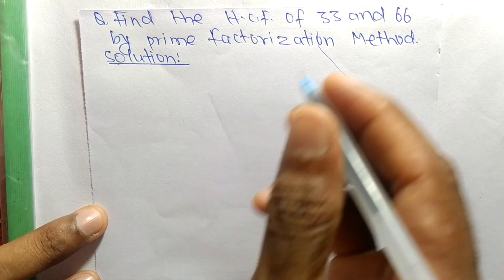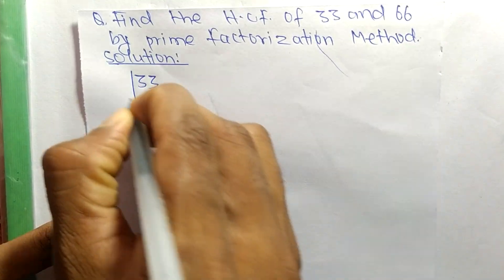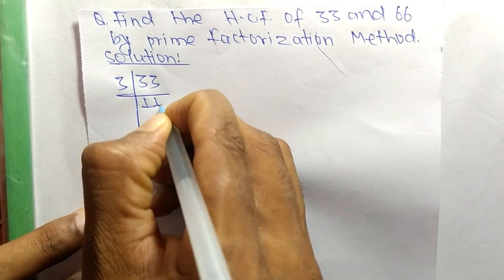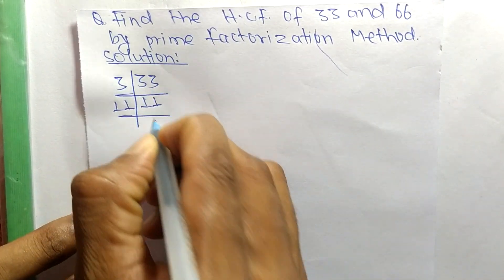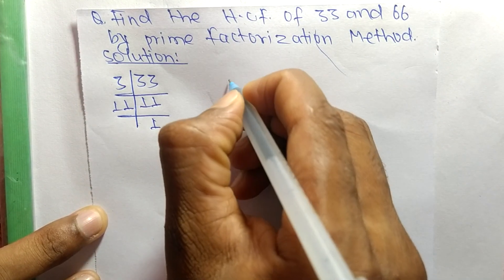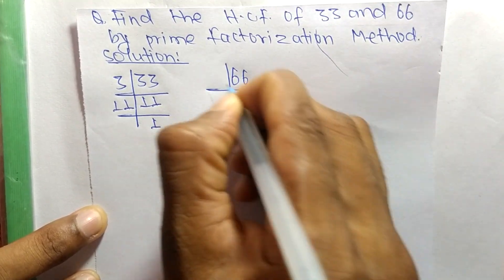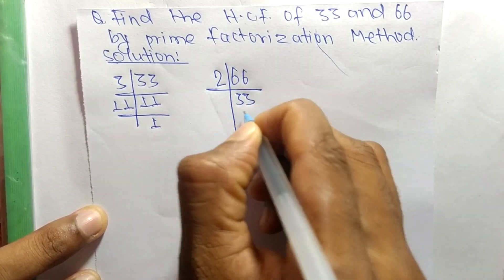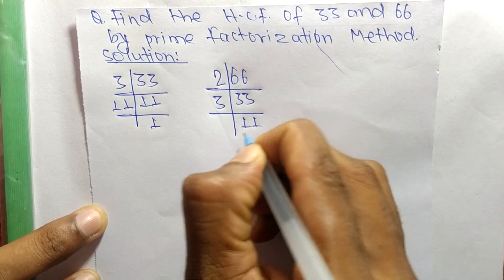The prime factors of 33 are: 3 times 11 equals 33, and 11 times 1 equals 11. The prime factors of 66 are: 2 times 33 equals 66, and 3 times 11 equals 33.